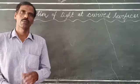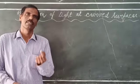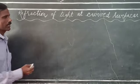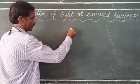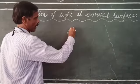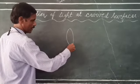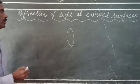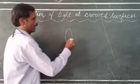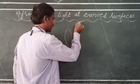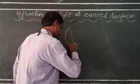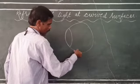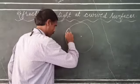Now we are going to learn center of curvature. What is center of curvature? As we discussed earlier, at least one or both the surfaces of a lens are spherical. Center of curvature is nothing but the center of the sphere of which one of the surfaces is a curved part.